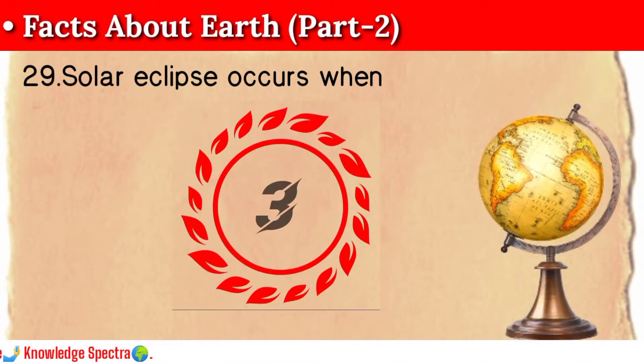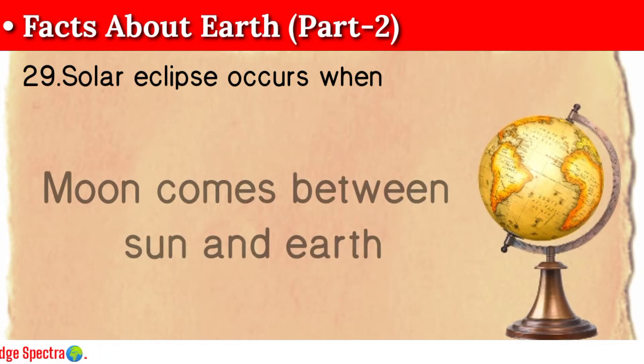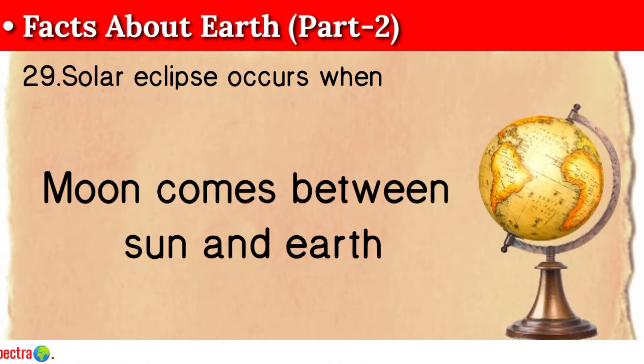Question 29: Solar eclipse occurs when? The moon comes between the sun and the earth.